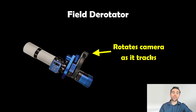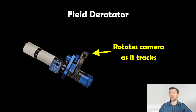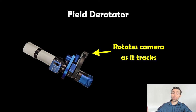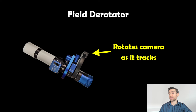You can compensate for field rotation. If you don't have an equatorial mount and just have an altitude-azimuth mount, you can use a field rotator — something extra to buy — but it will rotate the camera at the right speed to compensate for that field rotation, so you can get away with it without having an equatorial mount aligned to the polar axis.